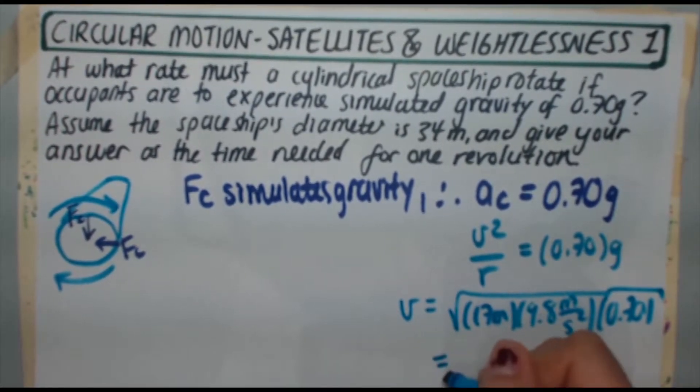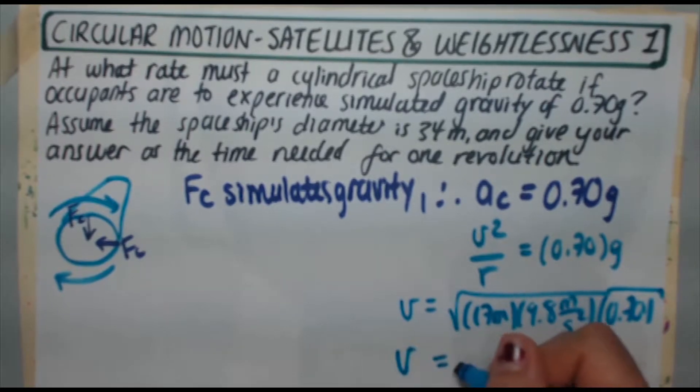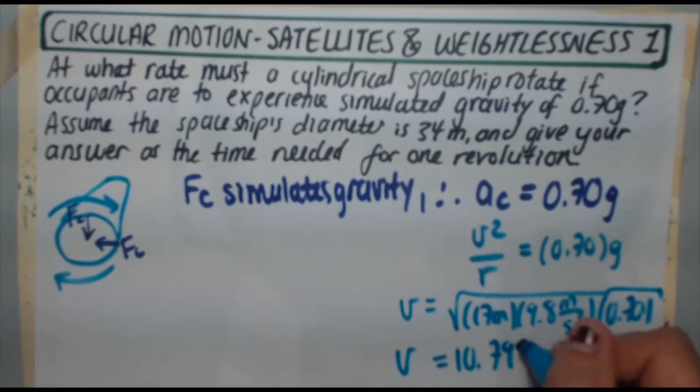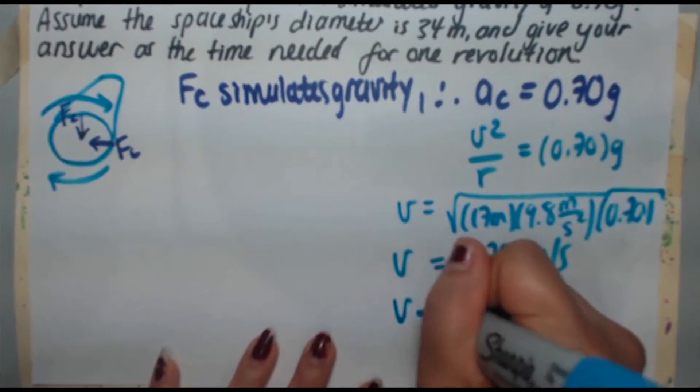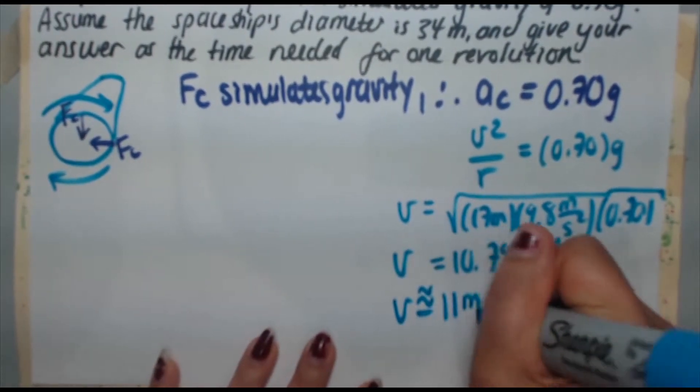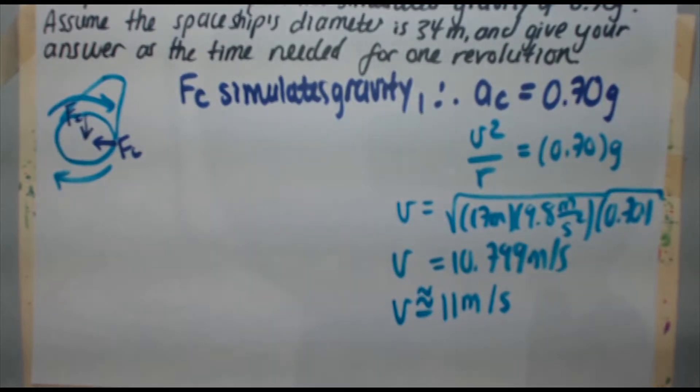Plug that in, take the square root and you are going to get v is 10.799 meters per second. When you round that you're going to get v is approximately 11 meters per second, and that's accurate to two sig figs as we need based on our problem.